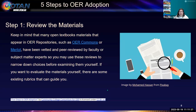Step one is probably our most in-depth step: reviewing the materials. Keep in mind that many open textbook materials appearing in OER repositories, such as OER Commons or Merlot, have been vetted and peer-reviewed by faculty or subject matter experts. You may use these reviews to narrow down your choices before examining them yourself. If you want to evaluate the materials further, or maybe it's a requirement of your institution, there are some existing rubrics and checklists that can guide you.